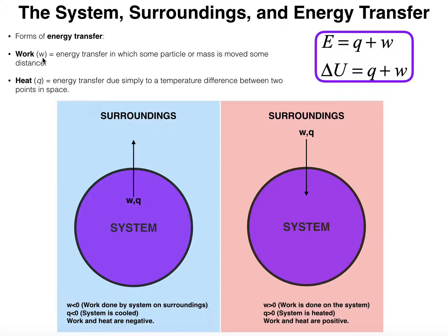Along the same lines, if you push on the wall in your house, you're not going to be able to move it no matter how much force you apply. Even though it may seem like you're doing a lot of work, in the context of physics and chemistry, no work is done — because to do work, you have to move the object some distance. One way we see work being done in chemistry is compression or expansion of a gas. If you have a balloon filled with gas and you compress it, the walls are moving, so that is an example of work being done.